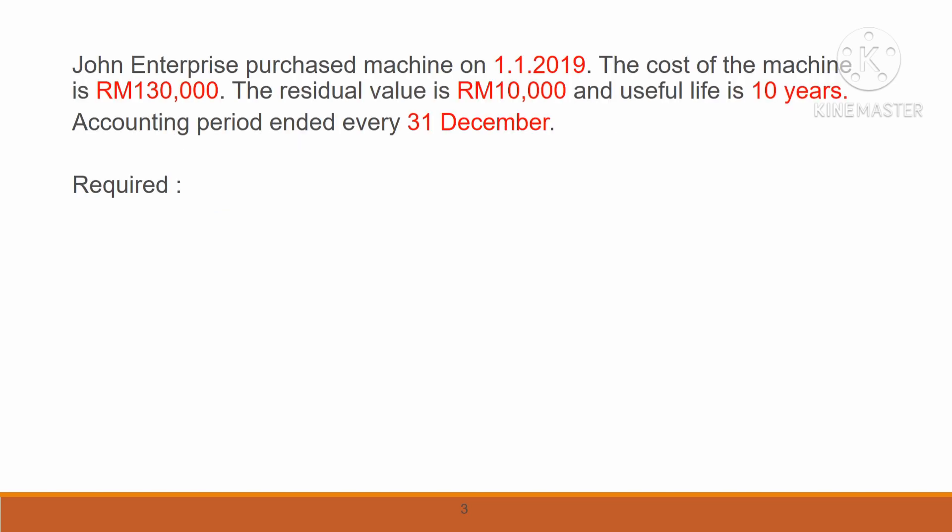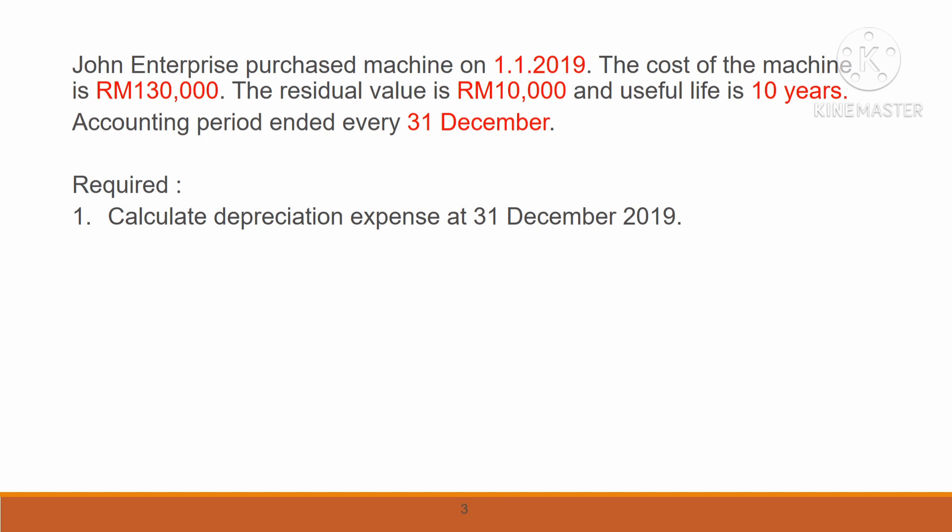We are given the example: John Enterprise purchased a machine on 1st January 2019. The date of purchase is 1st January 2019. The cost of the machine is RM$130,000, the residual value is RM$10,000, and the useful life is 10 years. The accounting period ends every 31st December. You are required to calculate the depreciation expense at 31st December 2019.